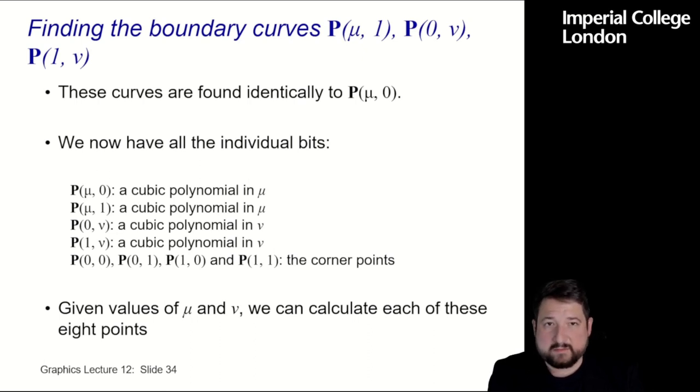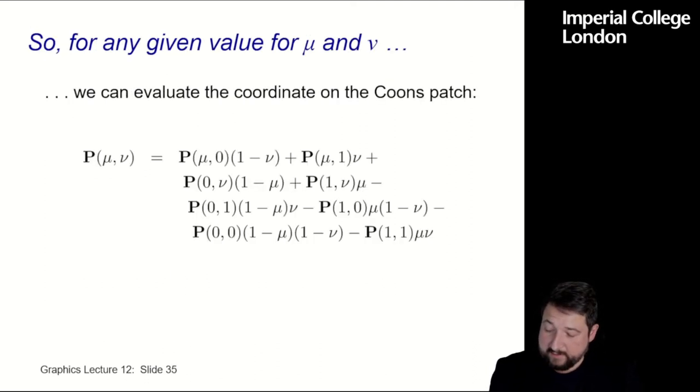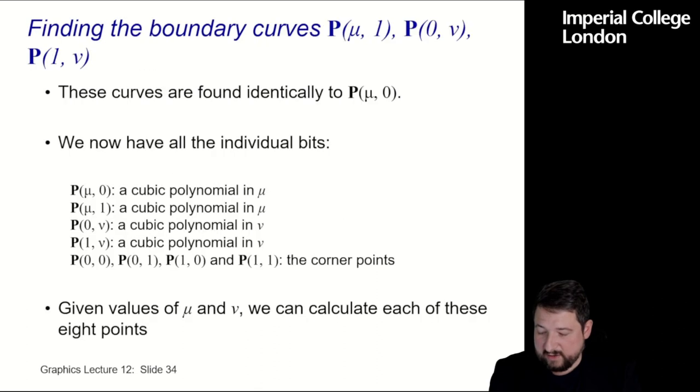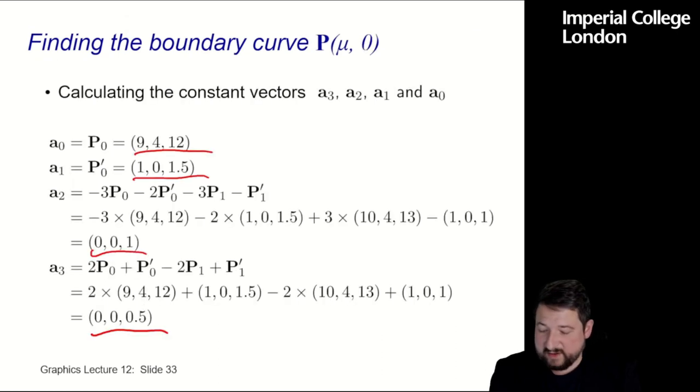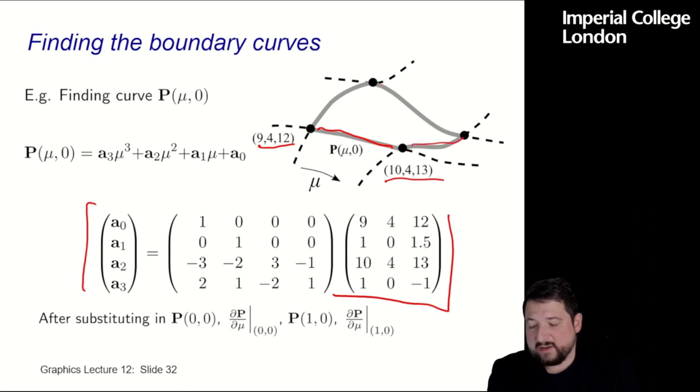Okay, and this is, with that, I can find any point on my boundary curve P(μ,0). So, for all the others, I can find them identically to P(μ,0). So, for P(μ,1), for P(0,ν), and for P(1,ν), I can find all the other points in the same way. And then I can use the Coons patch. And I just plug into the Coons patch our μ and ν, and I get, for every single point on the surface, a real coordinate, right?